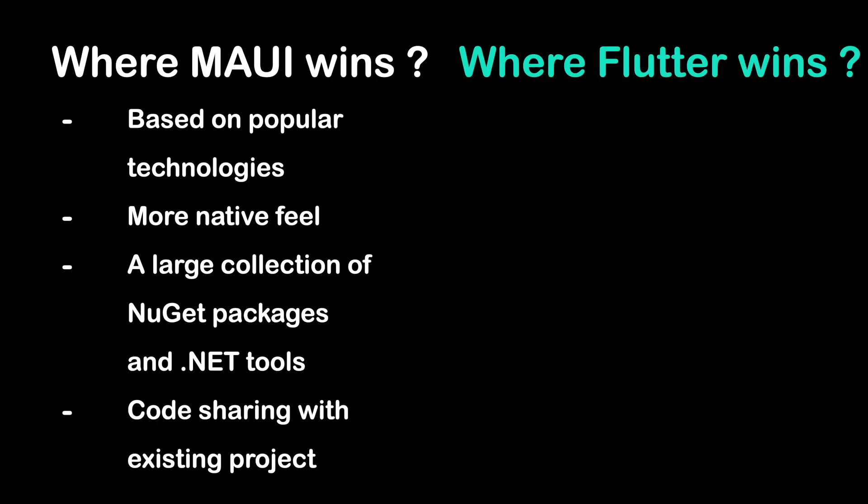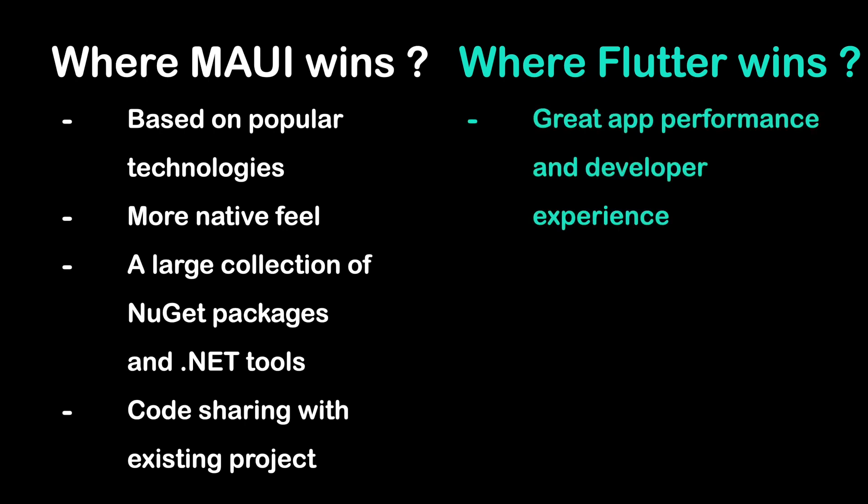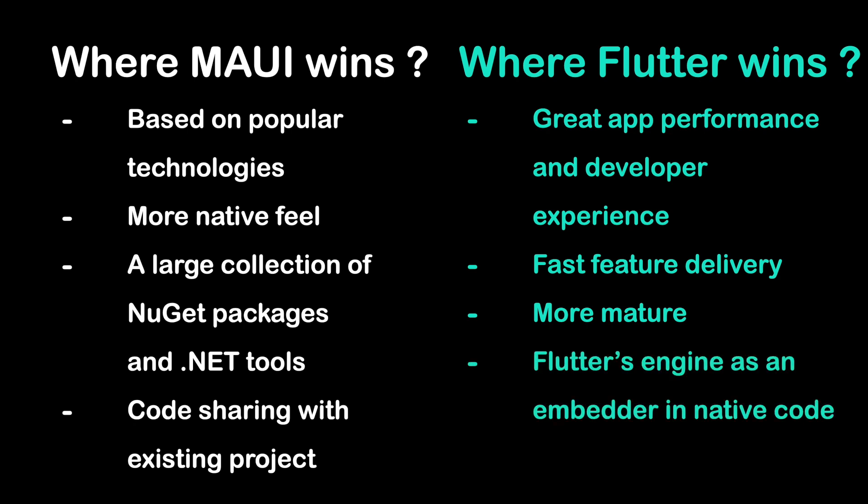On the other hand, where does Flutter win? The key advantages of Flutter are its performance and developer experience. Flutter applications tend to be smaller and faster than those built with .NET MAUI, thanks to Flutter's ahead-of-time compilation, which reduces the size of compiled code. Not only that, experienced Flutter developers can also deliver features quickly, thanks to a large collection of ready-to-use widgets and good inline documentation. Next, Flutter is more mature than MAUI, and many applications built with Flutter can be downloaded and tested. Thanks to an extensive collection of success stories, this makes it an easier choice. Lastly, Flutter's engine can run as a whole application or as an embedder, meaning developers are not limited by it. It is easy to jump into native code or add Flutter screens to an existing native application, so Flutter can be tested and showcased without total commitment.